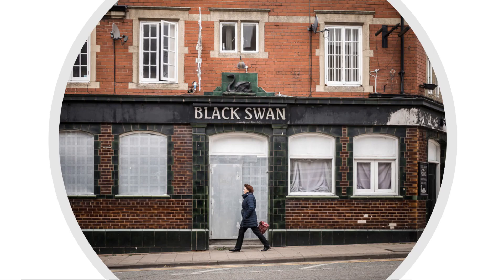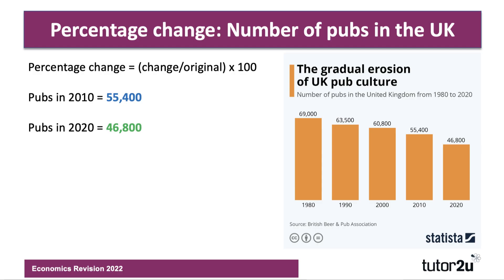Our second example involves a fall in something — this time it's the number of pubs in the UK. There's a boarded-up pub; the Black Swan is no more. The chart shows the number of pubs in the UK from 1980 through to 2020, with data points for each decade. What is the percentage change in the number of pubs in the UK from 2010 through to 2020? Press the pause button and have a go.